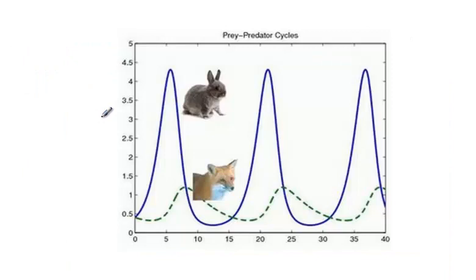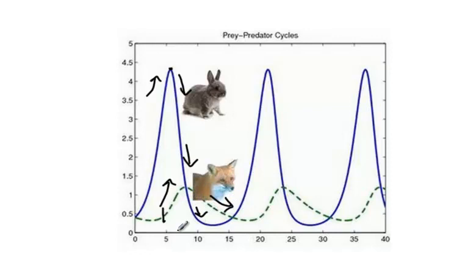Let's talk about the predator-prey graph. Here we see a graph showing a bunny population and a fox population. The bunny population will spike, and after that the fox population will follow. Once the bunny population has been eaten down by the foxes, it begins to fall, and once it falls, the fox population trails after it. So the prey leads the way on the graph for the predator.